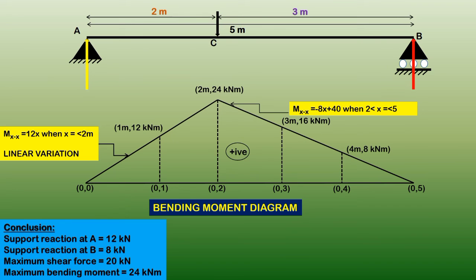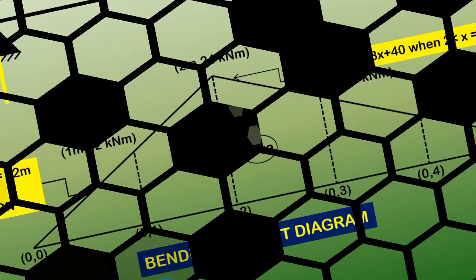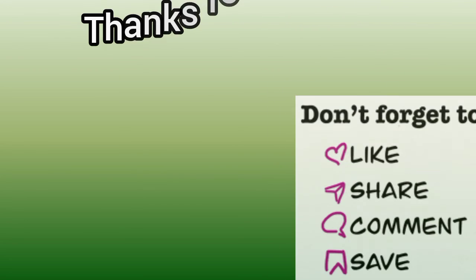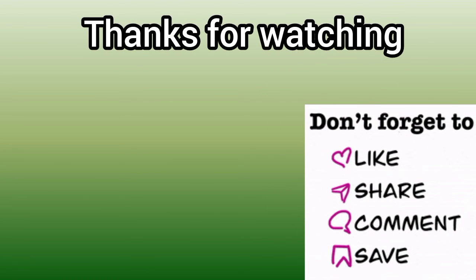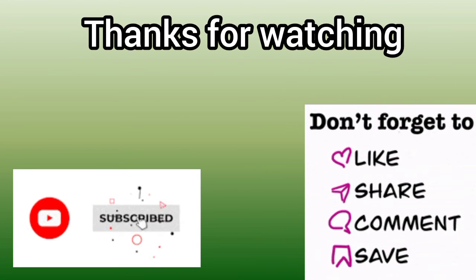In conclusion, the support reaction at A is 12 kN, at B is 8 kN, the maximum shear force is 12 kN, and the maximum bending moment is 24 kN·m. Once you have the bending moment, you can determine the required reinforcement. This completes the shear force diagram and bending moment diagram for the simply supported beam.